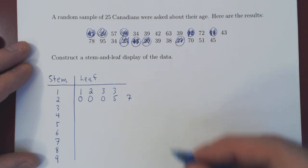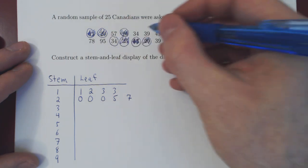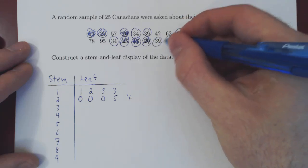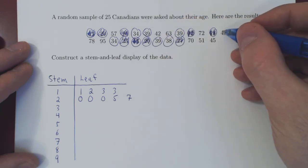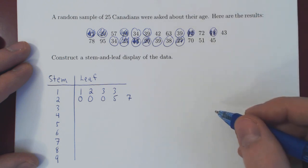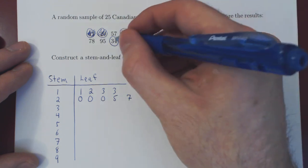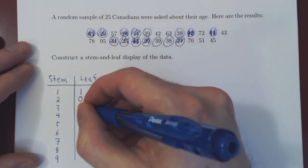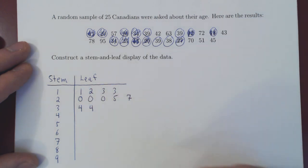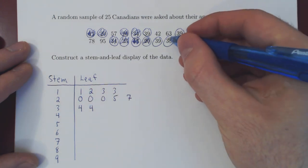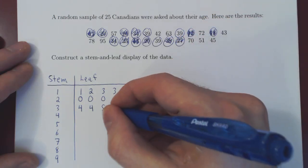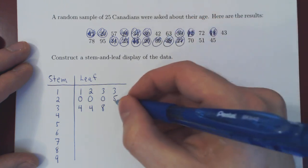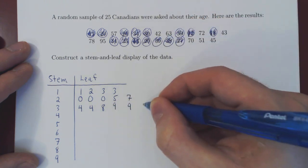Let's keep going. People in their 30s, there were six of those. There you go. So the smallest is four, so 34, 34, there's two of those. Then it's 38, and three people were 39: 1, 2, 3. So 9, 9, 9.